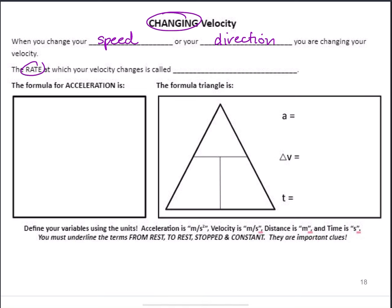We can measure the rate of this change by looking at what's called acceleration — that's a new term for us. I'm sure you've heard acceleration before, and you've probably also heard the word deceleration. Both of those indicate a change in the velocity of the object that is in motion.